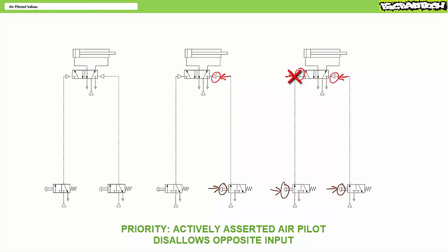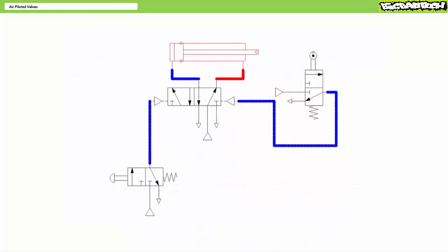Only when operator two releases push button two could operator one extend the cylinder. Priority ensures systems resolve conflicting inputs in a predictable fashion. Now that we've explored some advantages and applications, and discussed memory and priority exhibited by air pilot valves, let's take a look at a simple pneumatically controlled or air piloted pneumatic system.